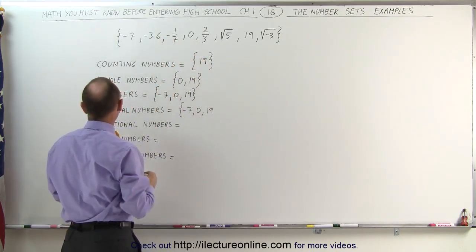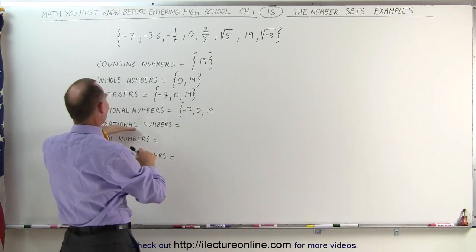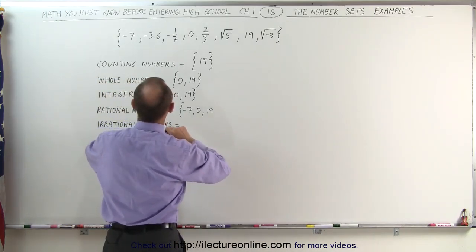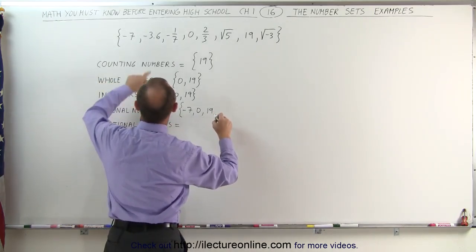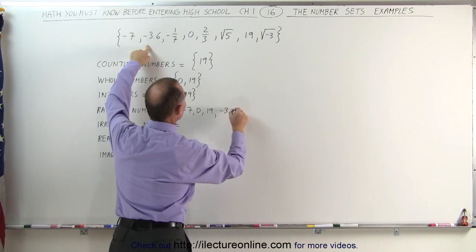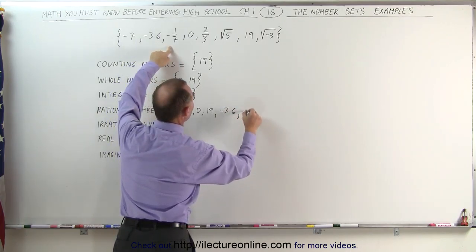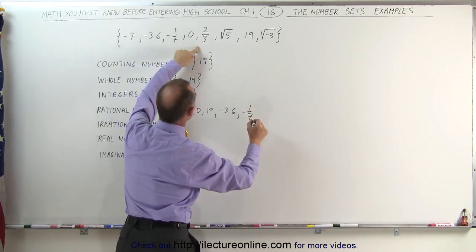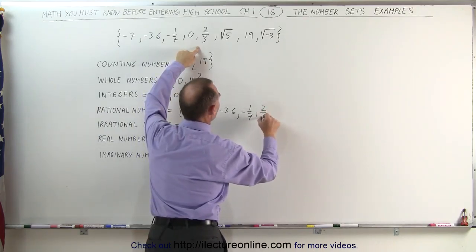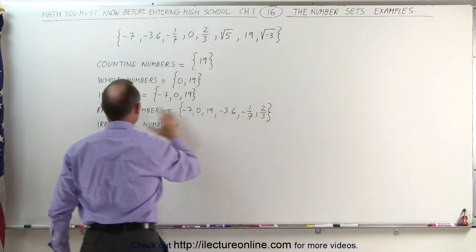are also called rational numbers. We're not at the irrational numbers yet. They're rational numbers, so we can include the number minus 3.6, the number negative 1 over 7, and the number 2 over 3. So these are all the rational numbers.